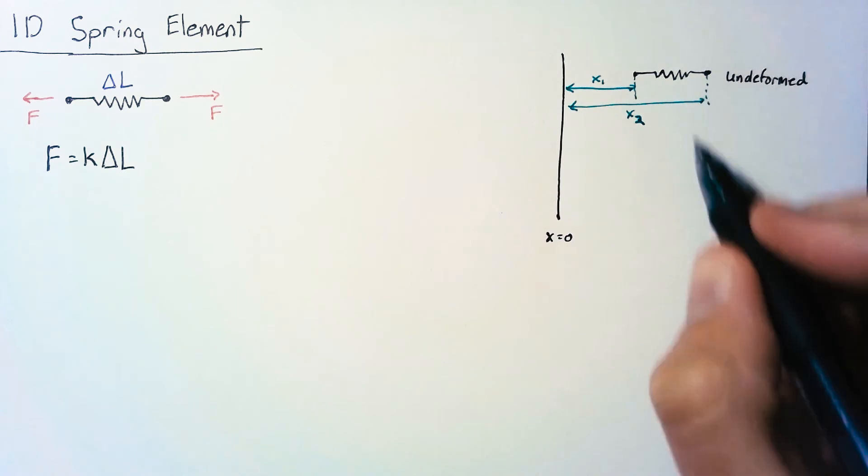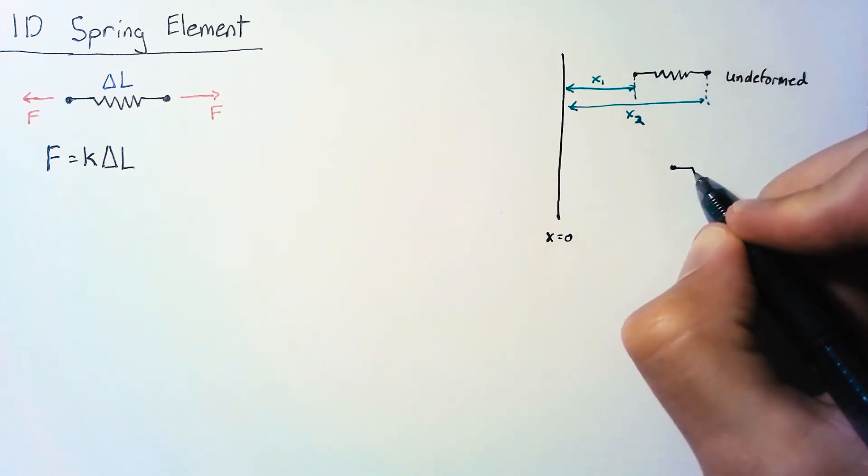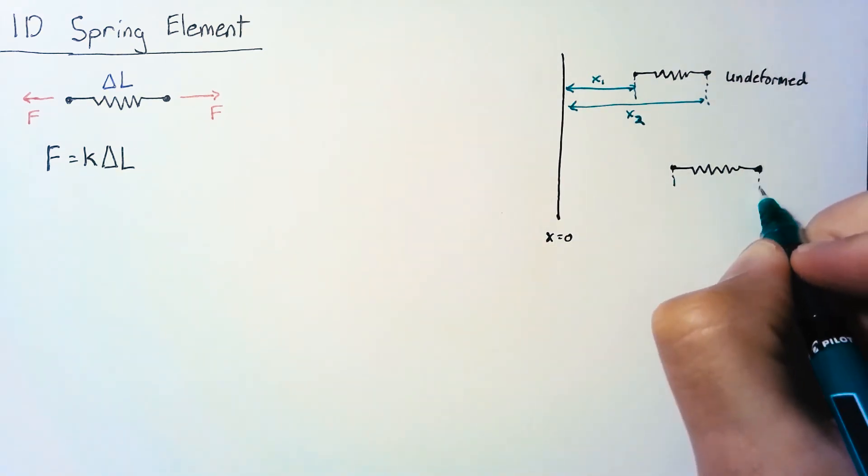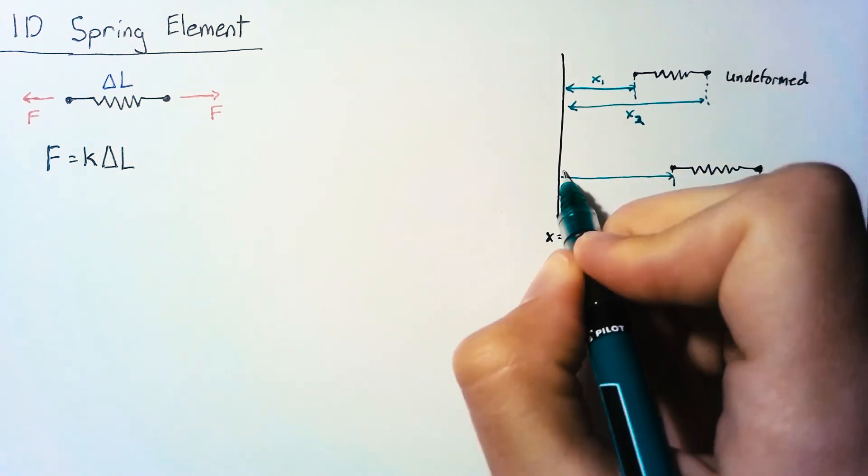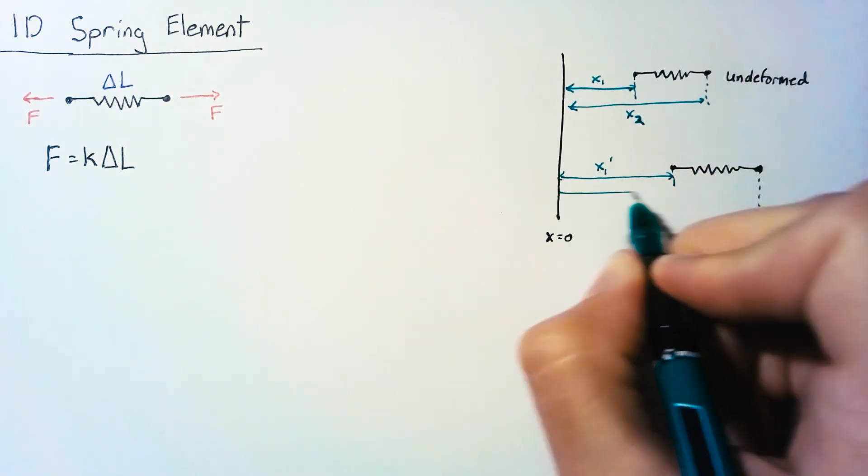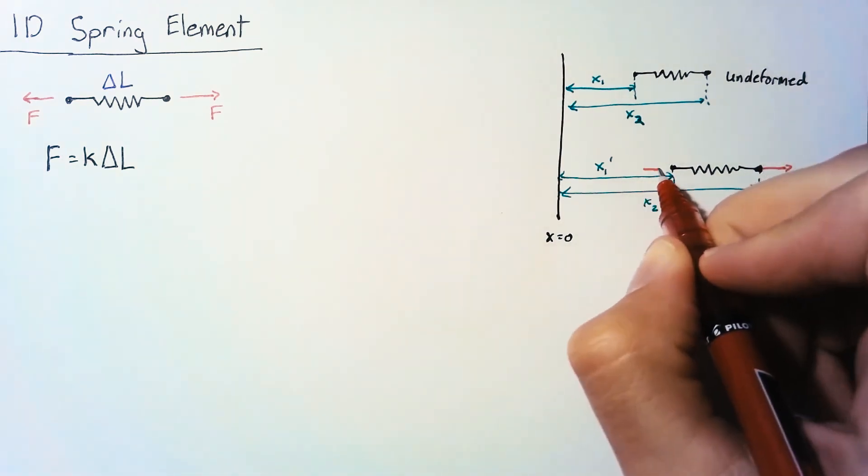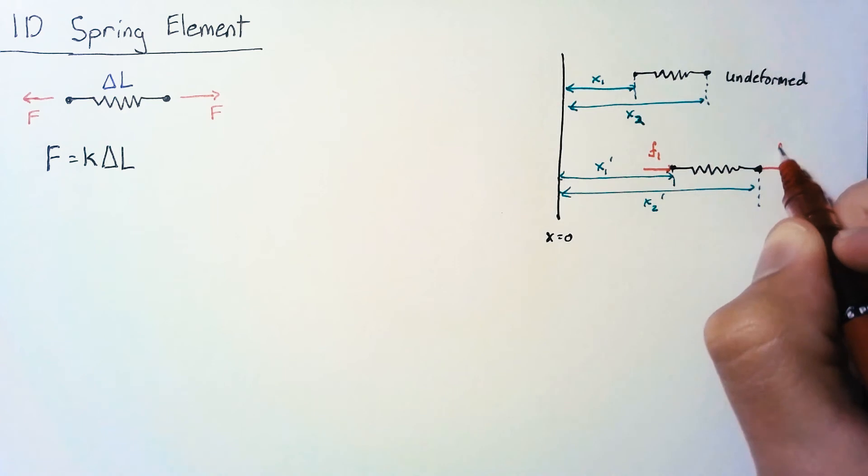Now once we apply some forces this is going to move and so let's say that we see it move both to the right and stretch. Now we're going to have new positions of these two nodes which we'll list as x1 prime and x2 prime. These have moved because of some forces. We're going to call those forces f1 and f2.